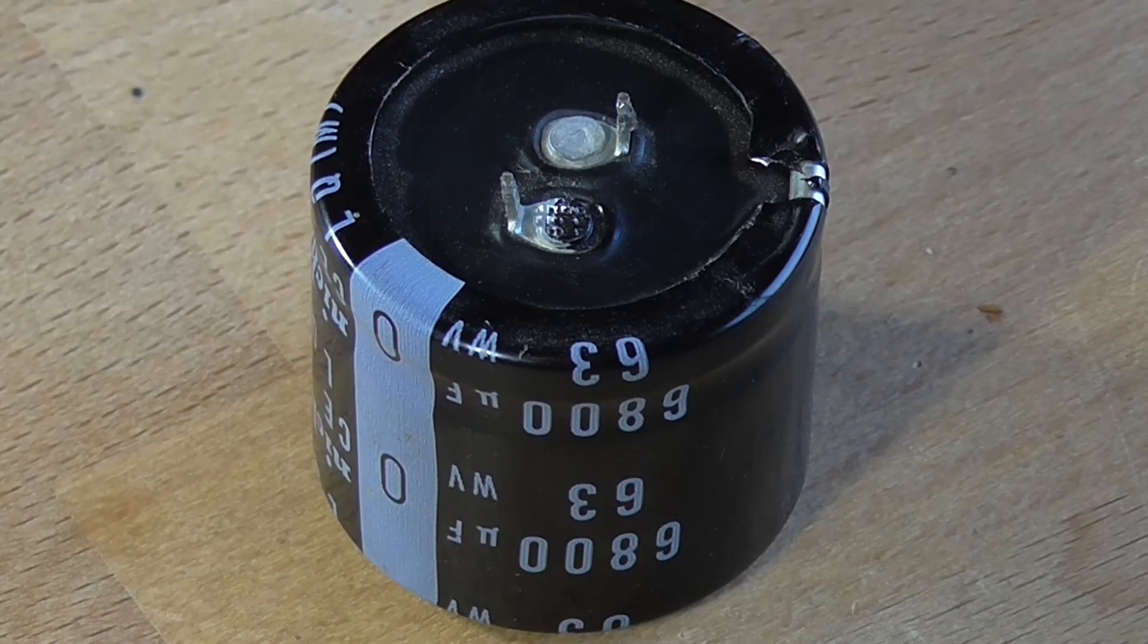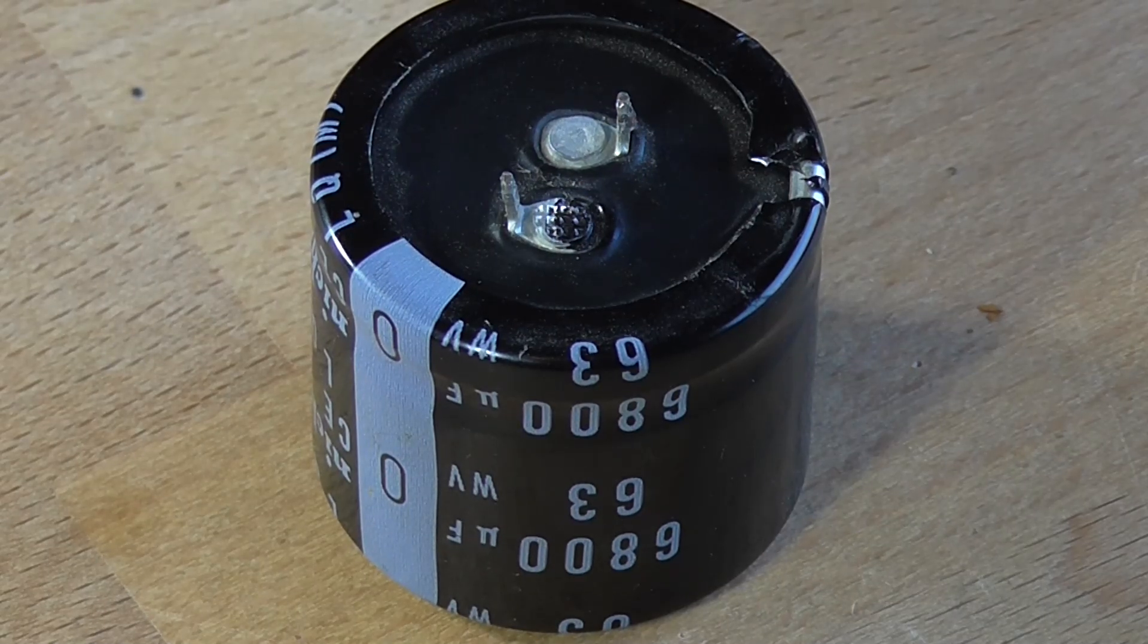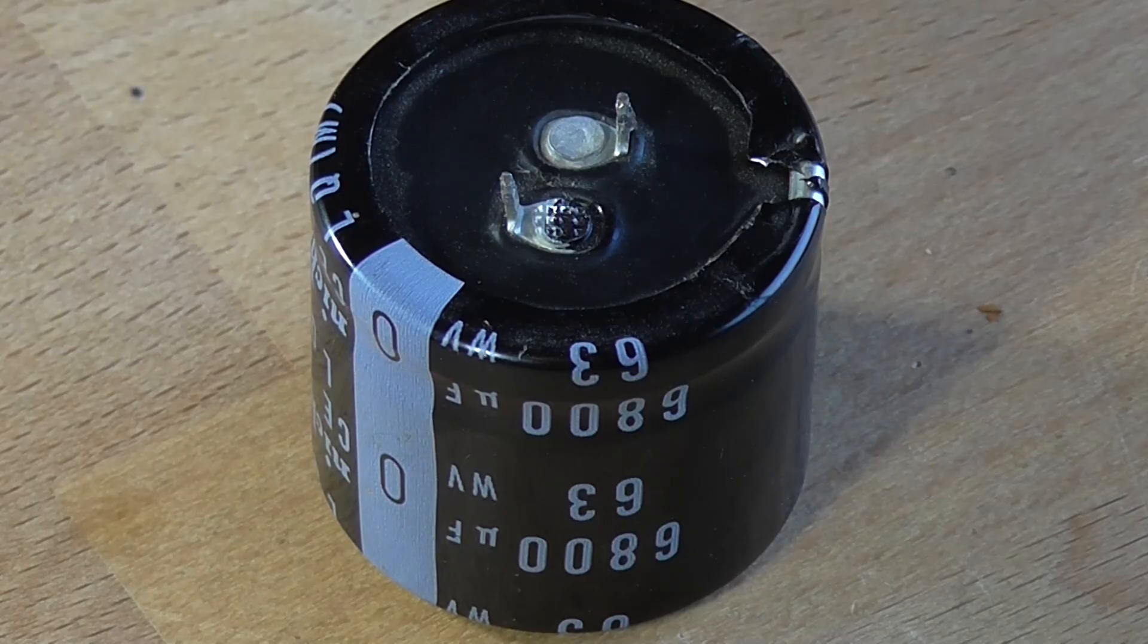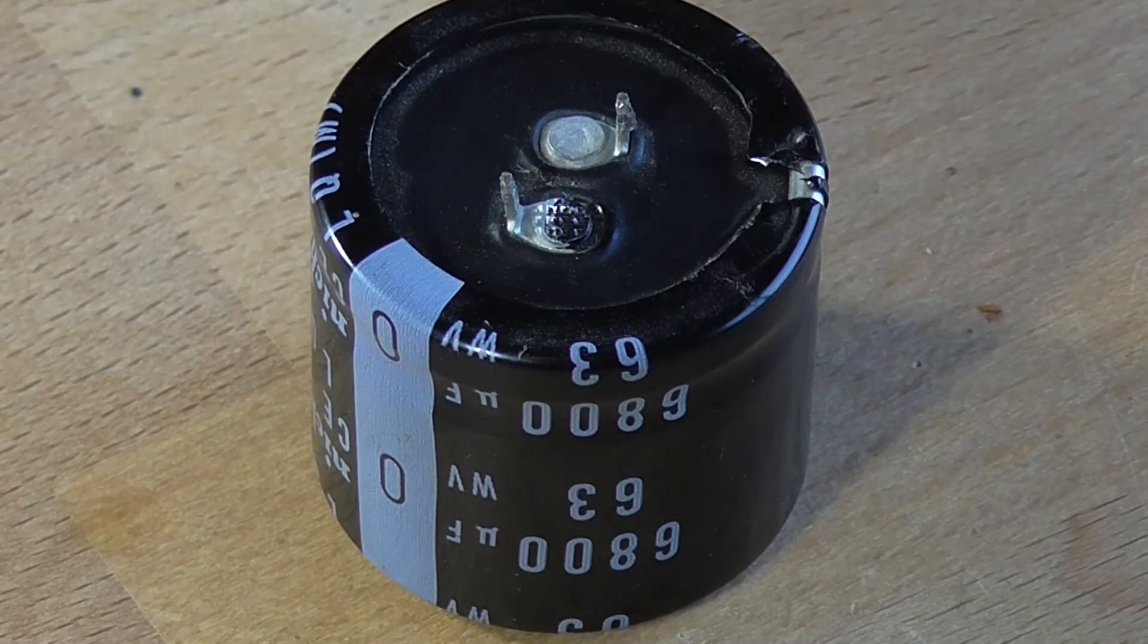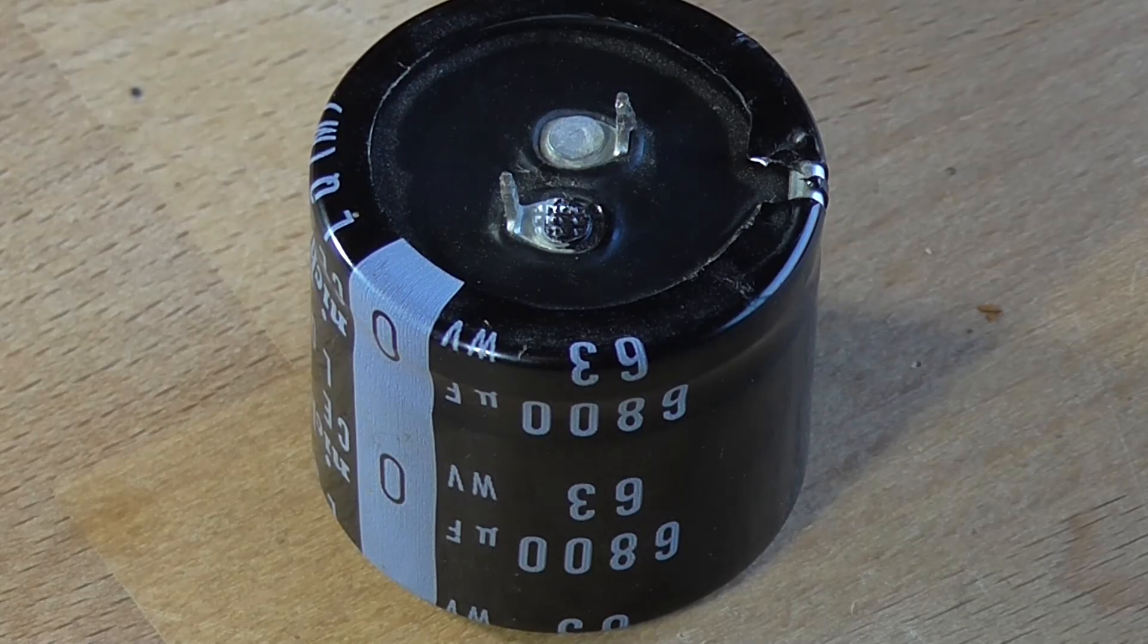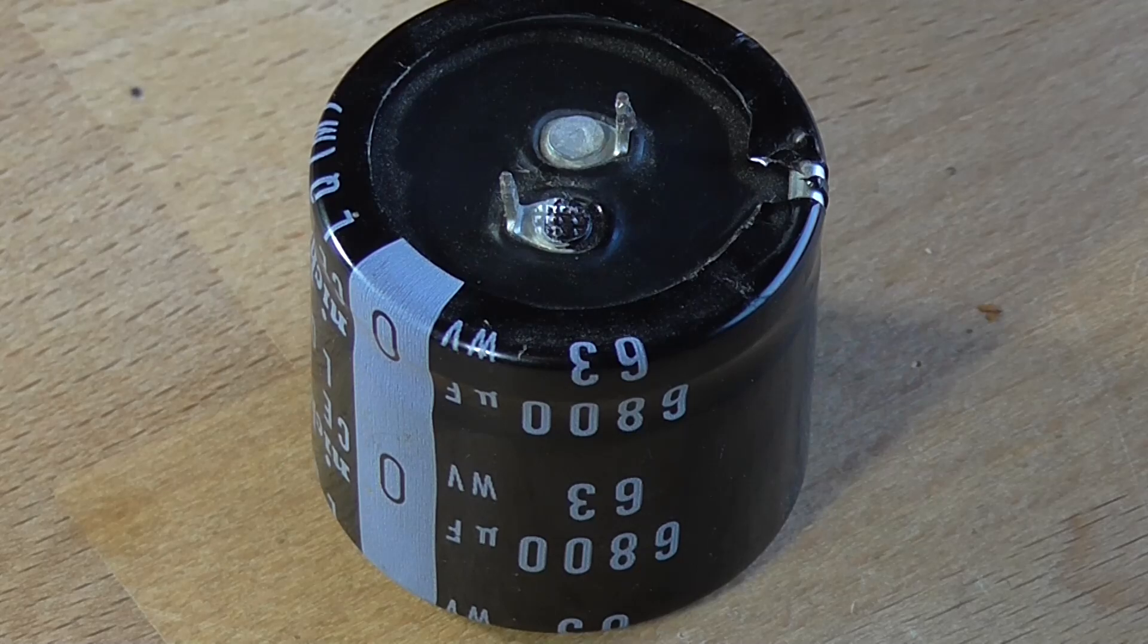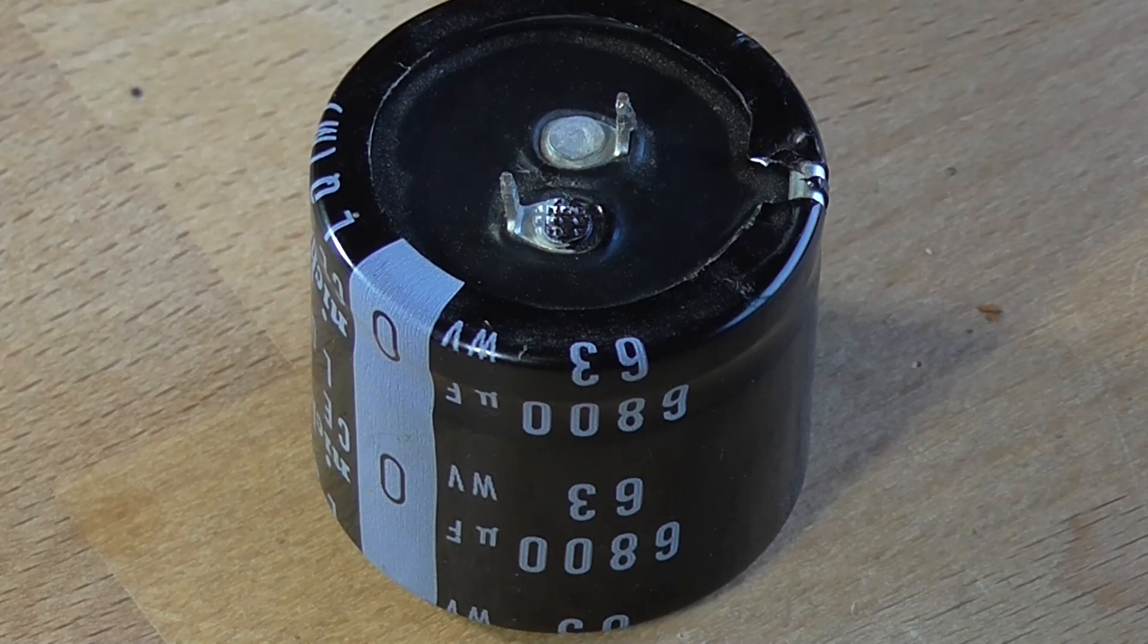So I have a bunch of these Nichicon 6800 microfarad capacitors, 63 volt. In fact, I've got four of them, and I have measured the capacitance of each of them and they're around the 6300 to 6400 microfarad range. So the capacitance is a little bit varied. That could be due to two things. One, that the ESR of the capacitor is starting to go up, or two, which is most likely, is that the capacitance meter isn't that accurate, which is more likely.